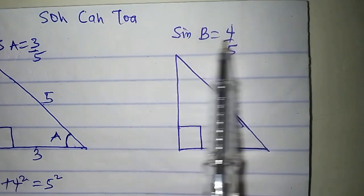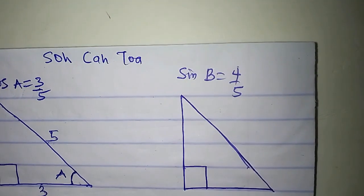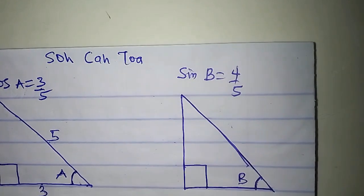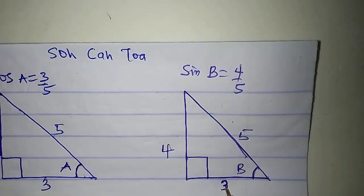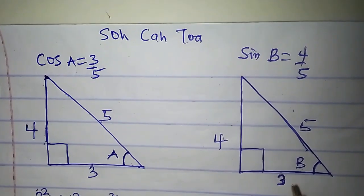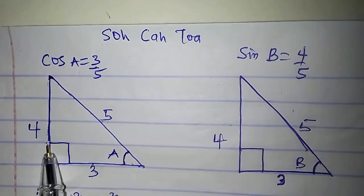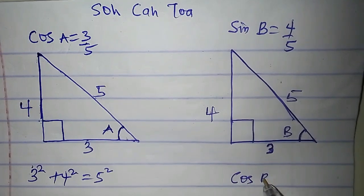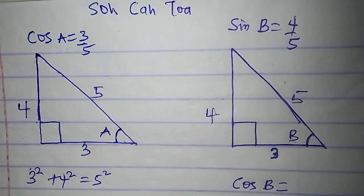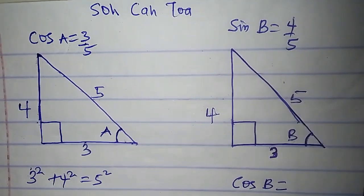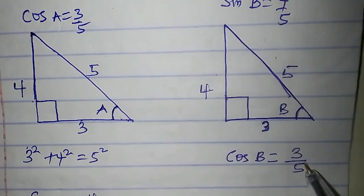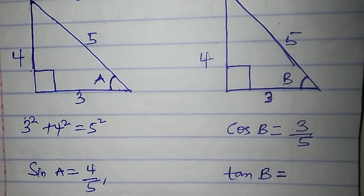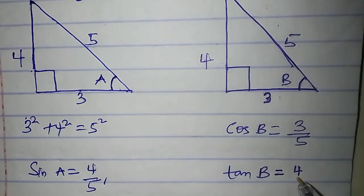Now let's get the ratios for B. Sin B is 4 over 5. Using the same method, if I place B in the triangle, sine is opposite over hypotenuse, so the opposite is 4 and the hypotenuse is 5, making the adjacent side 3 — still a Pythagorean triple. So sin B is 4 over 5. Cos B is adjacent over hypotenuse, which is 3 over 5. And tan B is opposite over adjacent, which is 4 over 3.